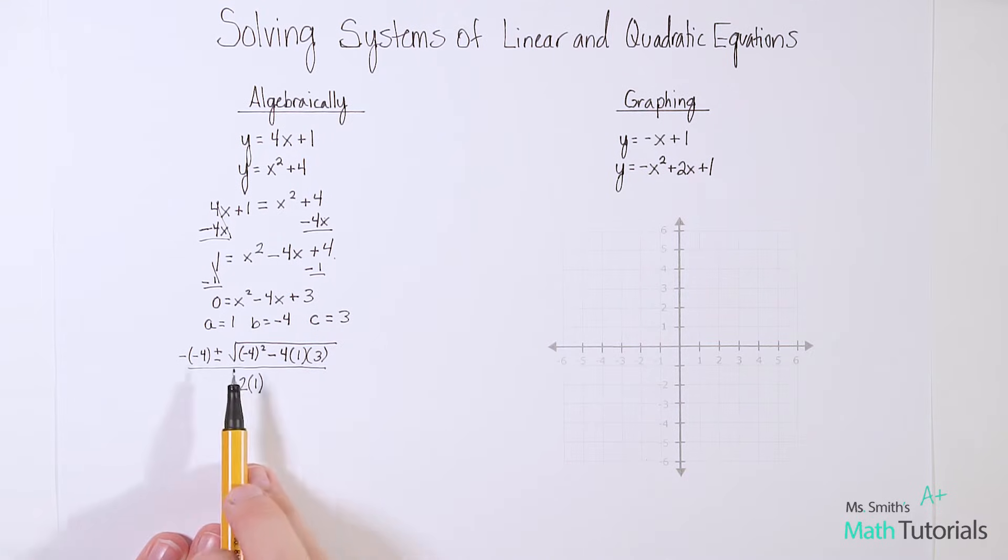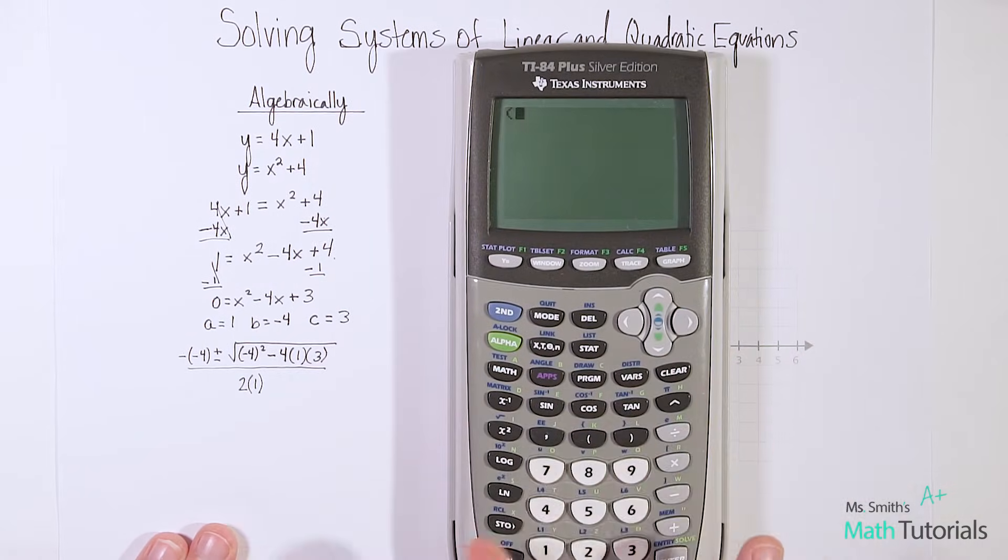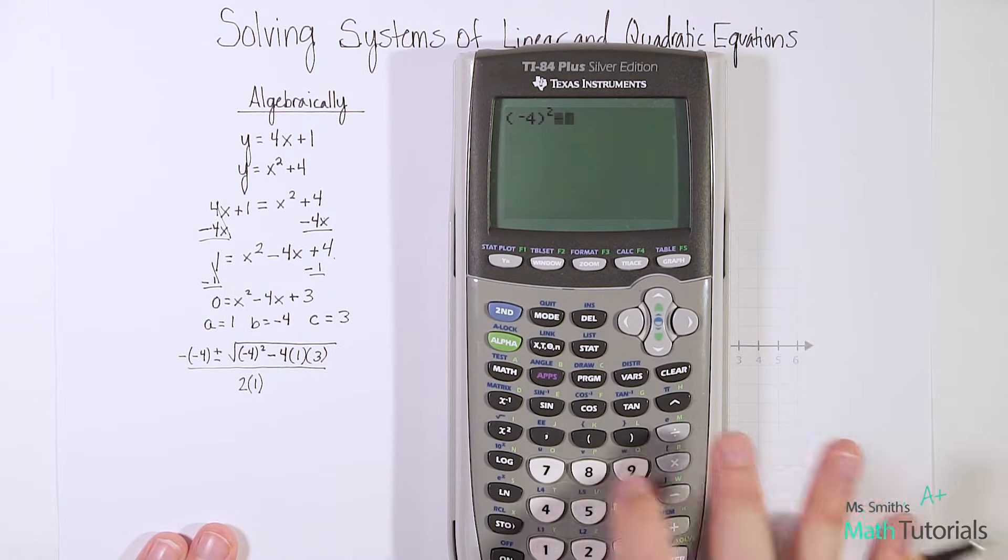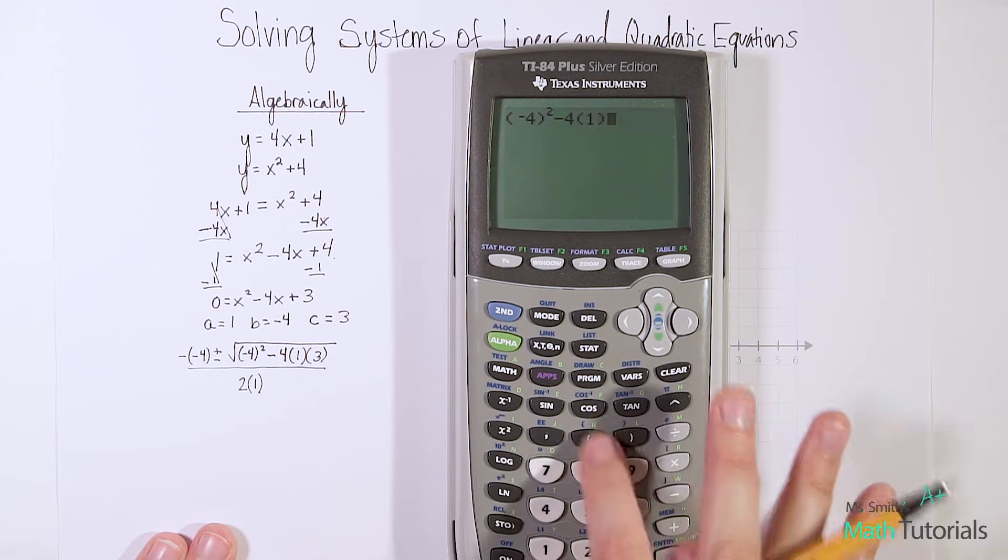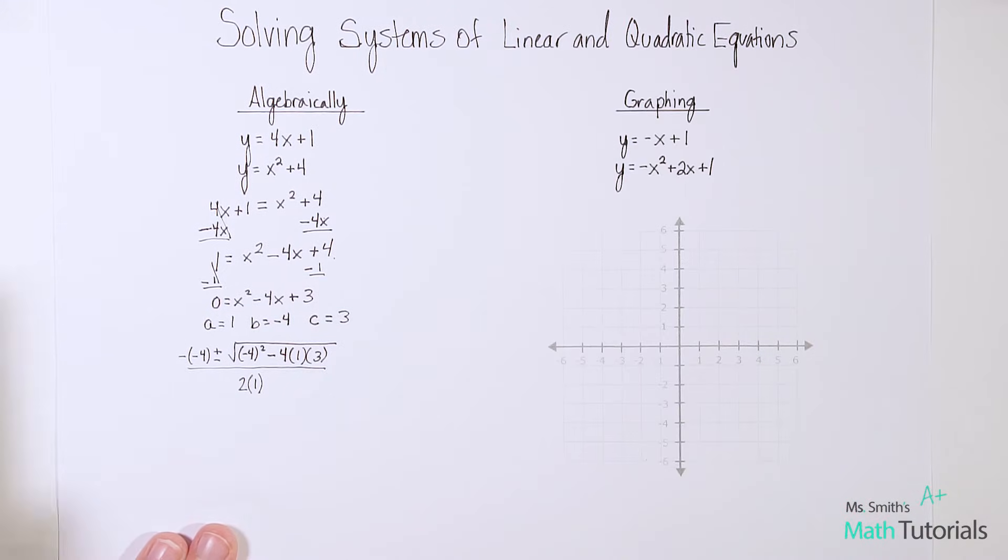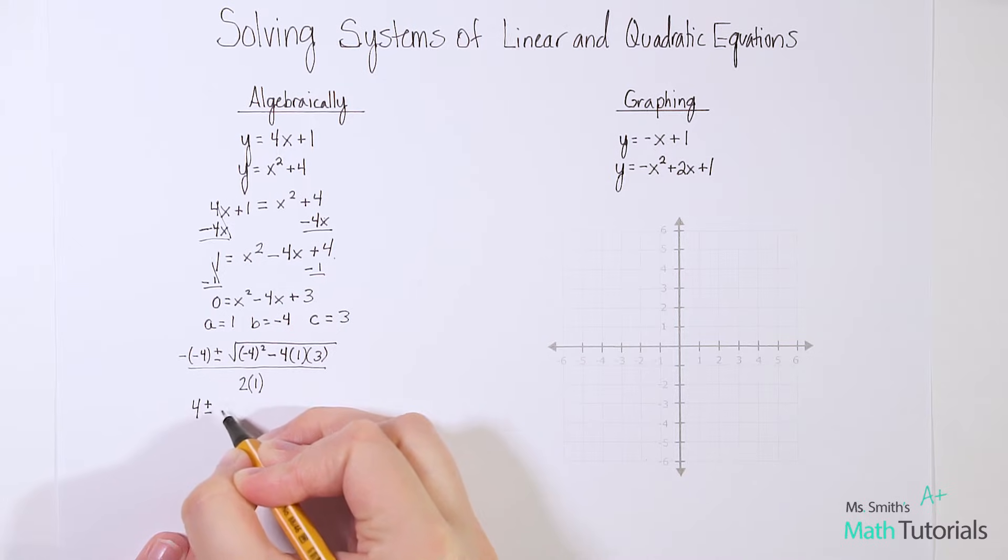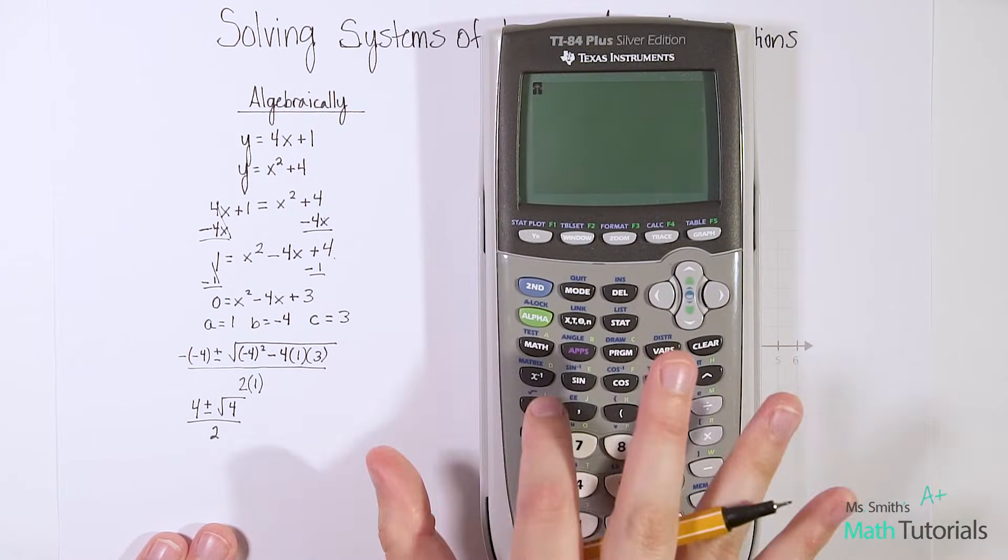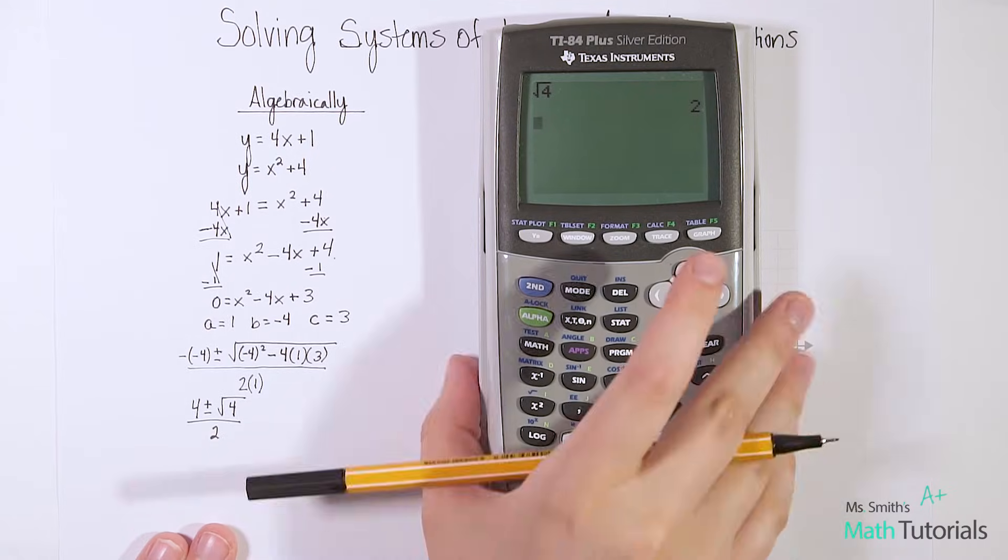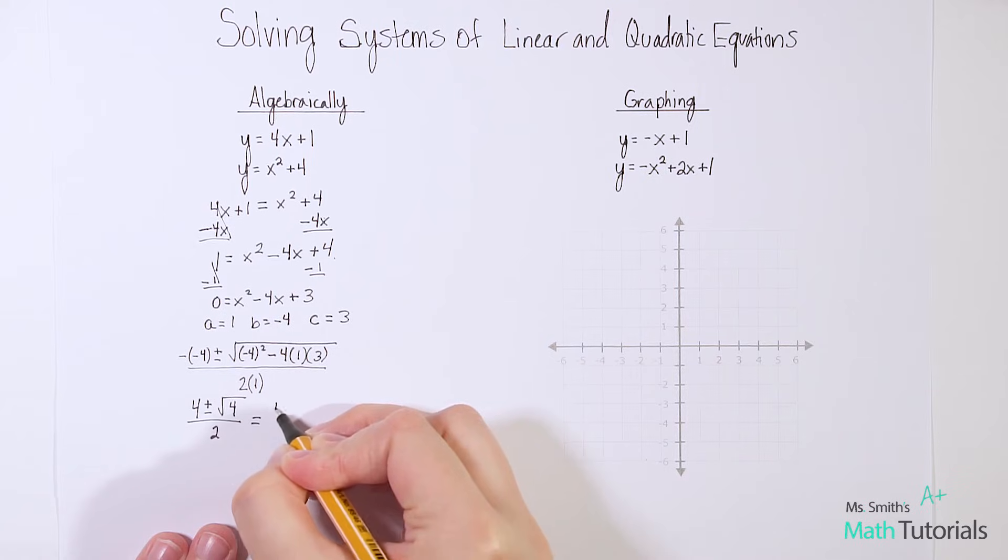Remember when we use the quadratic formula, we first simplify what we have underneath the radical. So let's use our calculator to do that, save some time. Negative 4 squared must have those parentheses, minus 4 times 1 times 3. And we get 4. So that means we've got negative times a negative, remember that's a positive 4, plus or minus the square root of 4, all over 2 times 1 is 2. So can we simplify square root of 4? Does that reduce, is that a perfect square? Let's check. Square root of 4, and we get 2, we get a nice whole number. So that reduces really well to 4 plus or minus 2, all over 2.